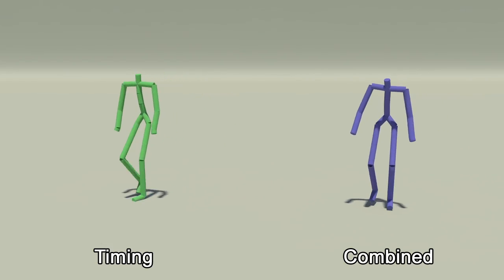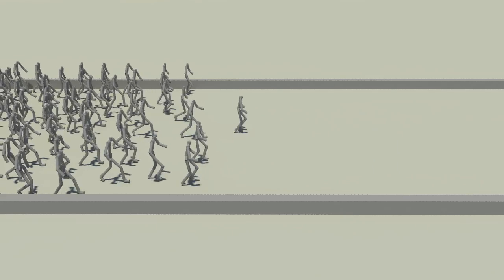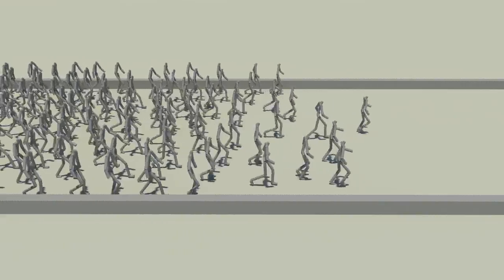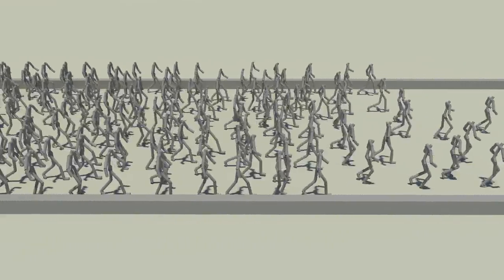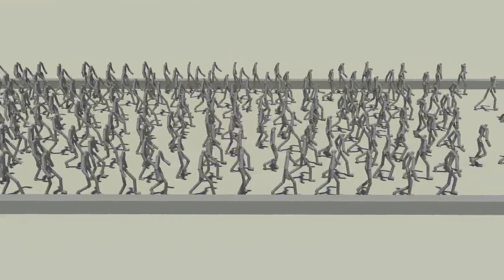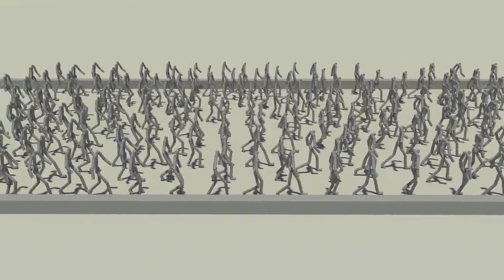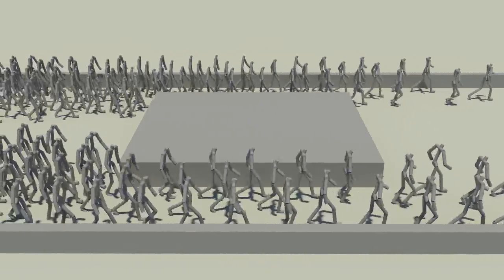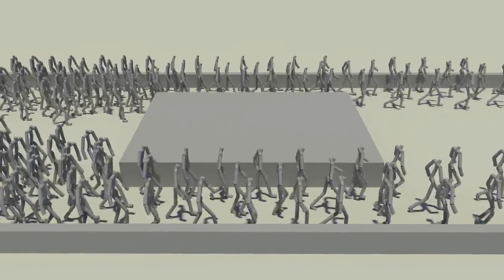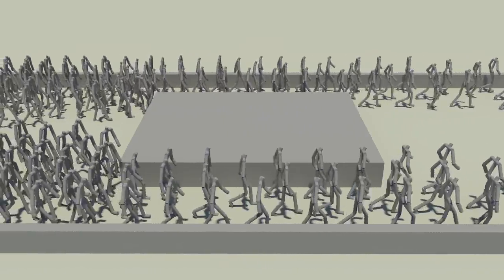Our method can run on the GPU in parallel across the timeline. This makes it very fast and therefore perfect for crowd animation. Here we generate 10 seconds of motion for a crowd of 200 characters. This takes 1.8 seconds with motion edits applied in 2.2 seconds for a total speed of 30,000 frames per second.